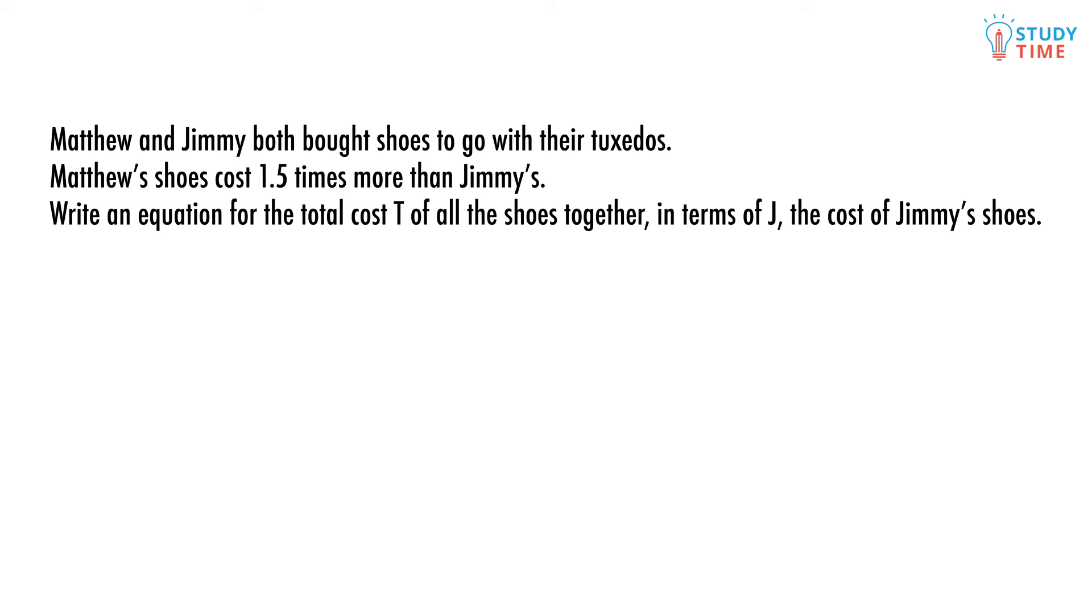Obviously T, the total, is just the cost of Matthew's shoes and the cost of Jimmy's shoes added together. But we're given one extra piece of information: Matthew's shoes cost 1.5 times more than Jimmy's. We can write this as M equals 1.5J. If we know M equals that, we can just substitute 1.5J into the equation. So now it reads T equals 1.5J plus J.